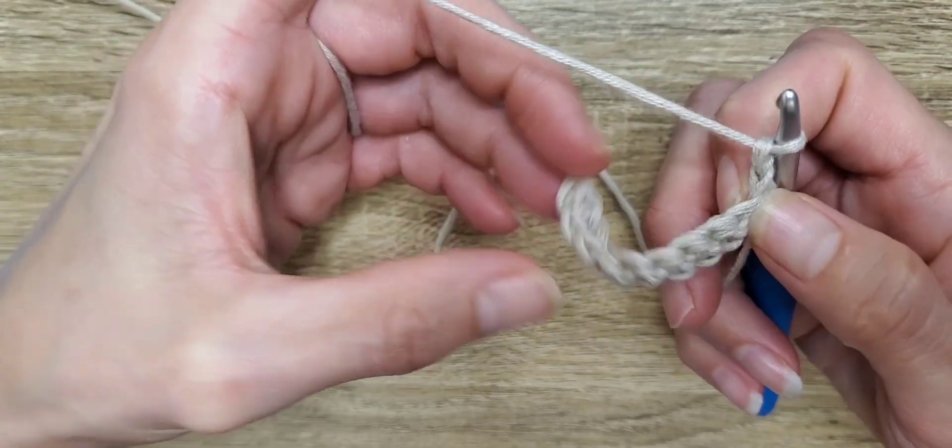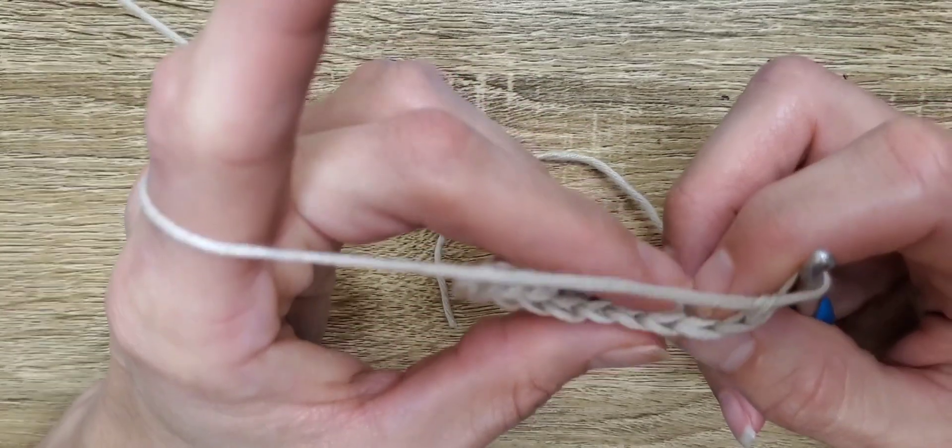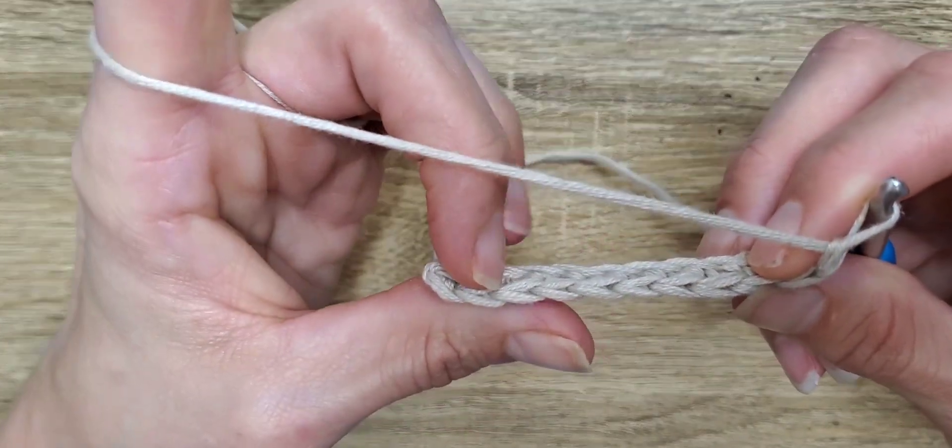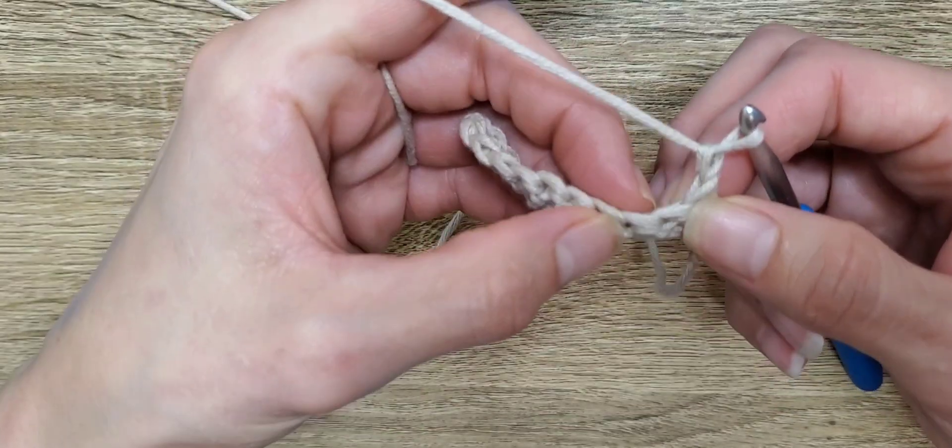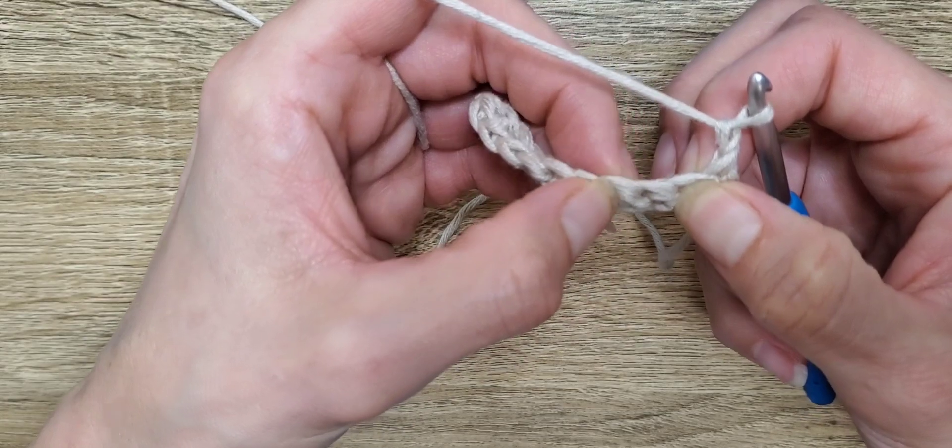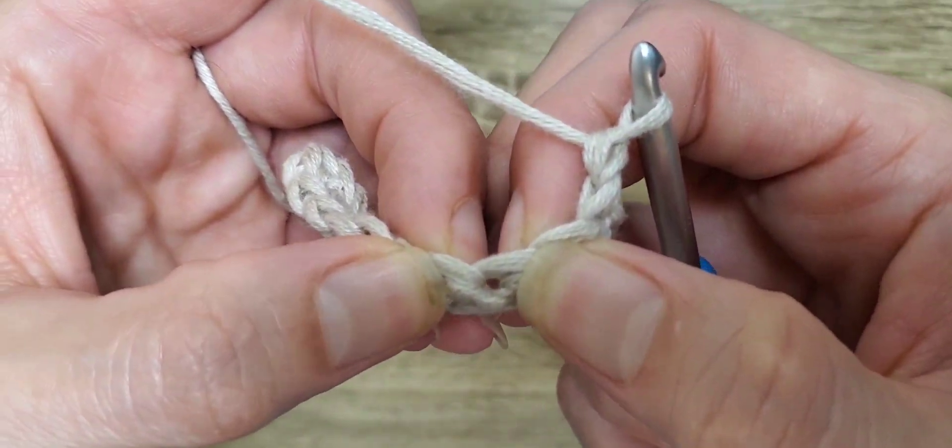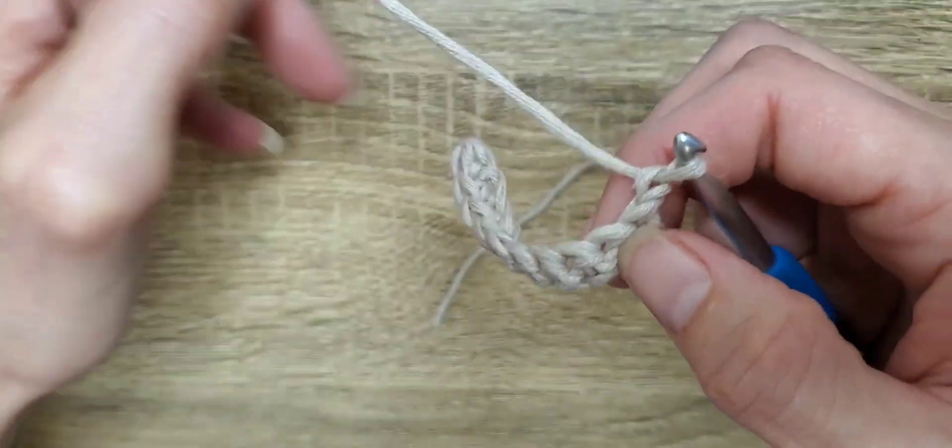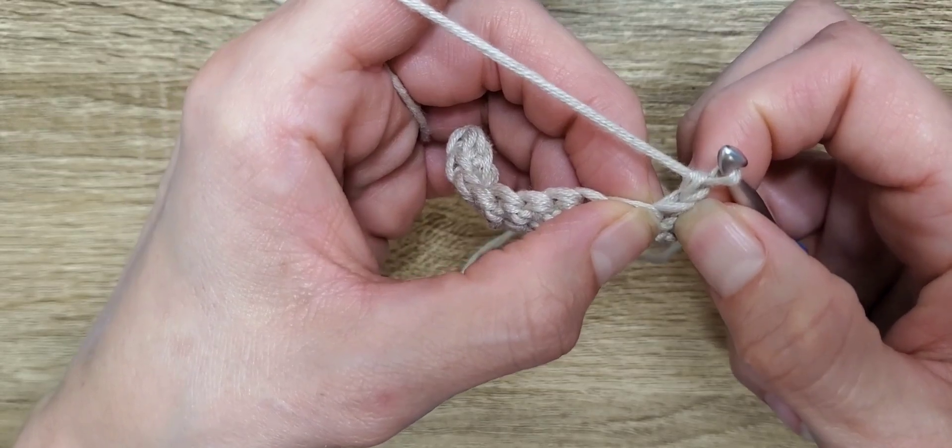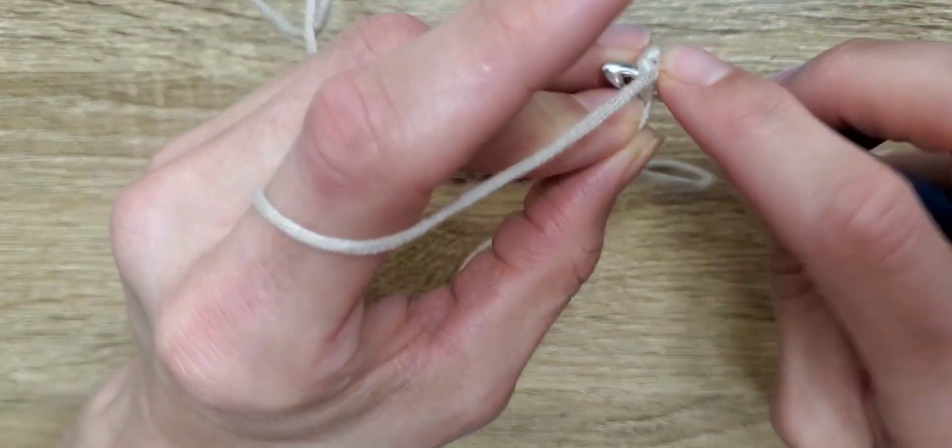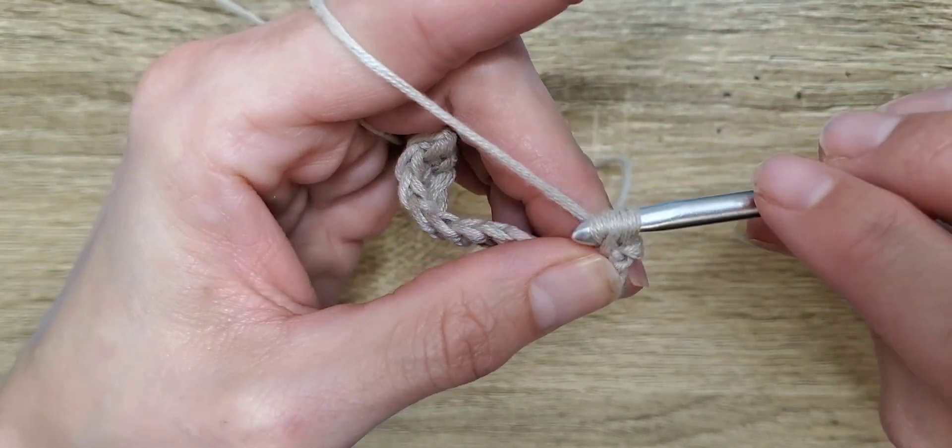Now, the chains look a little bit different. They don't look like that foundation chain. You have the V's that you see at the top of the work. But, you have these holes that you see underneath the V's. You see those holes. So, we're going to be working into those holes. And we're going to start by working into this first one that we chained one. So, we're going to go in, pull over, yarn over. Yarn over, pull through two. There's one.